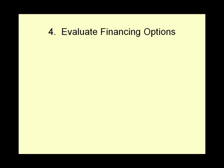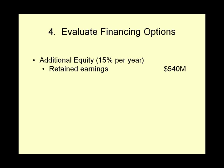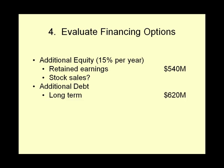The fourth step is to evaluate the financing options for the asset requirements. In our example, the firm determines it needs approximately $540 million in additional equity from retained earnings, with possible additional stock sales, and expects to add $620 million in long-term debt and $90 million in short-term debt to its balance sheet. Now let's see how we go from the firm's current balance sheet to its balance sheet in five years, accommodating the new asset requirements and financing options.